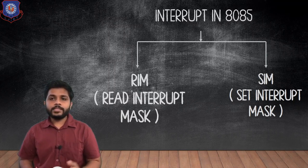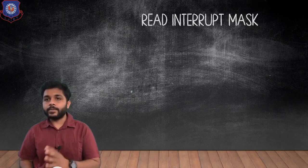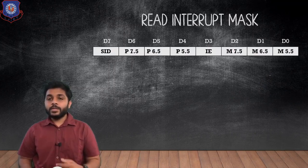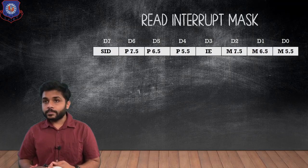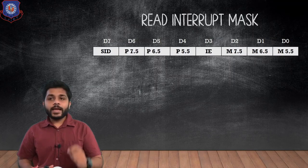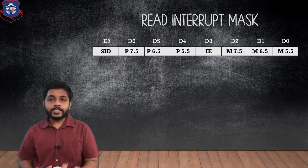Let's see the first instruction: Read Interrupt Mask. This is the format of the RIM instruction. It is an 8-bit format and each bit represents something specific.